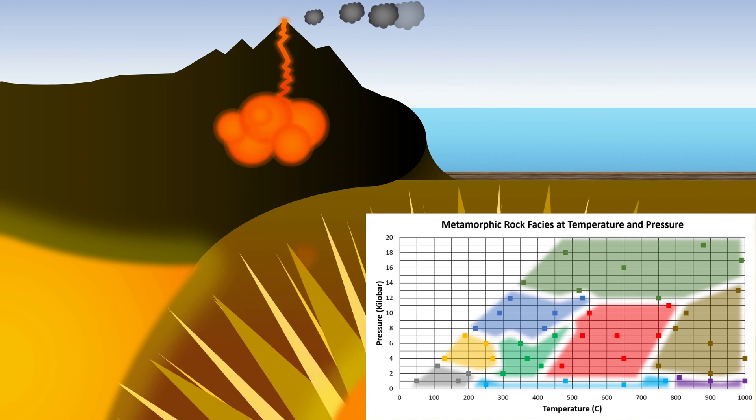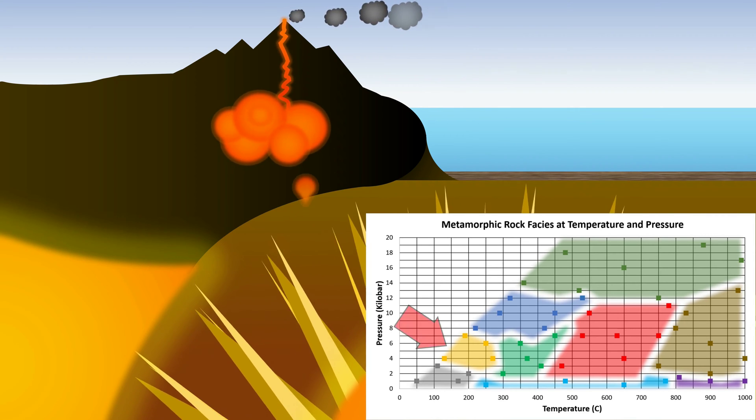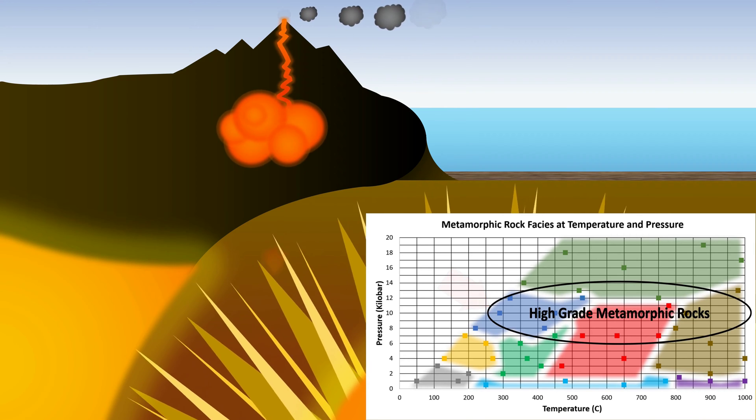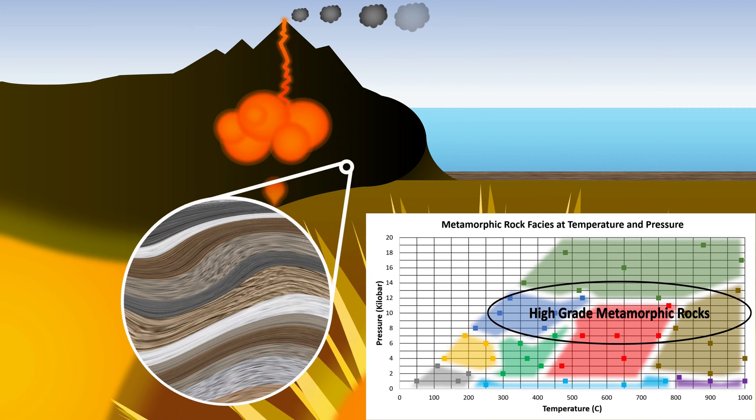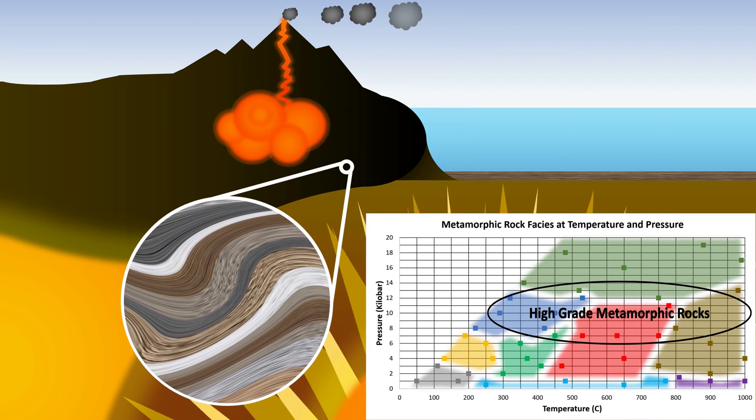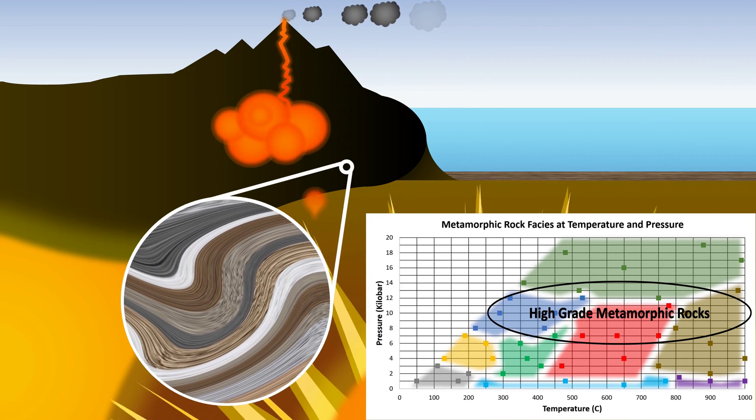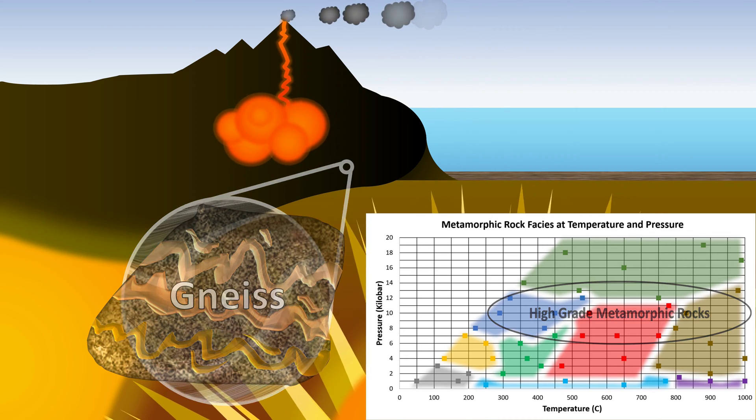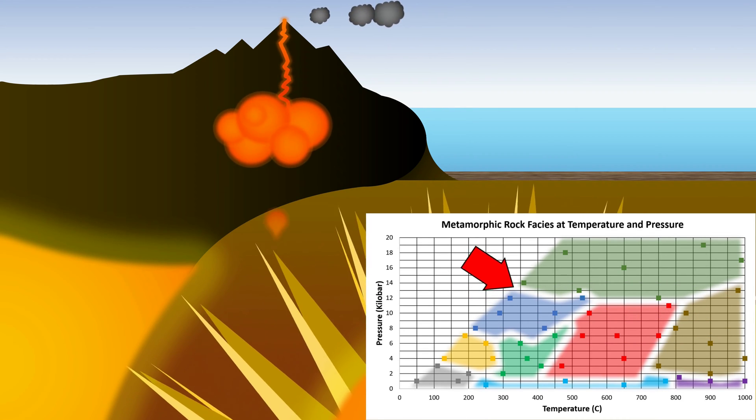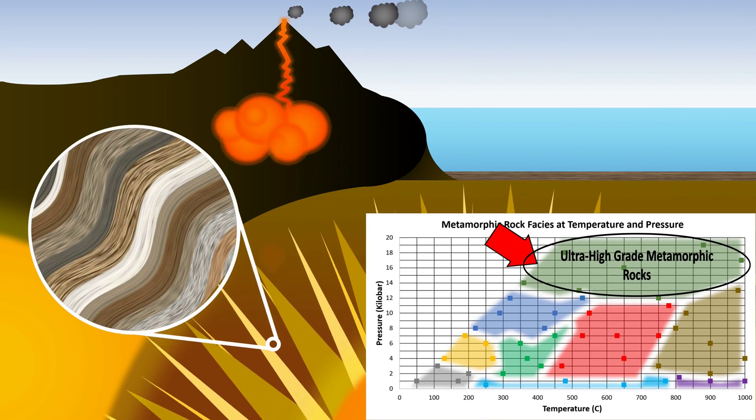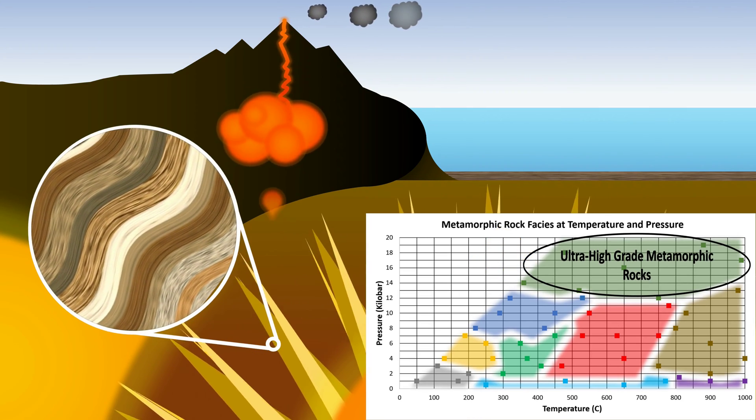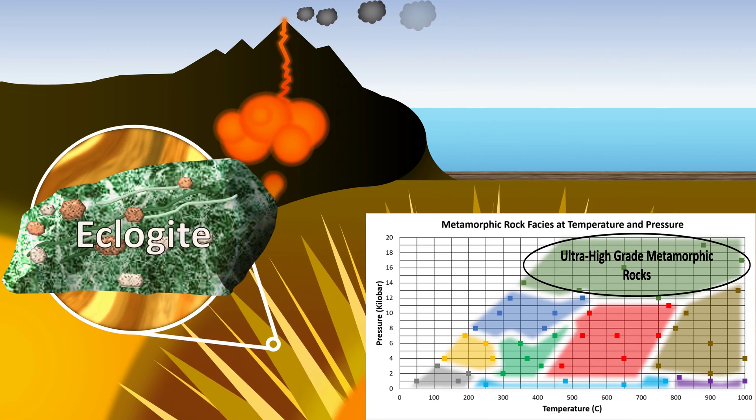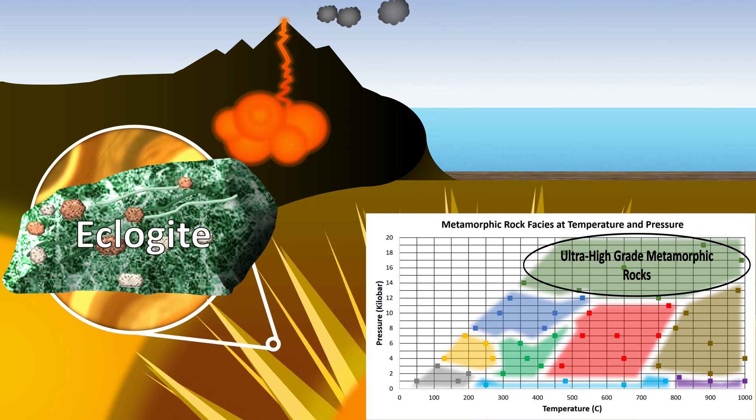Now let's find some high-grade metamorphic conditions. Now we're moving farther up the graph and to the right. These rocks are produced under huge pressure, which means we find them being made deep beneath Earth's surface. Far beneath the base of these mountains, the pressure and temperature conditions are great enough to produce high-grade metamorphic rocks, such as gneiss. We can go even deeper to find ultra-high-grade metamorphic conditions. In this subducting tectonic slab, the metamorphic conditions are so extreme that the rocks become soft and malleable. One of the highest-grade metamorphic rocks you can find is called eclogite.